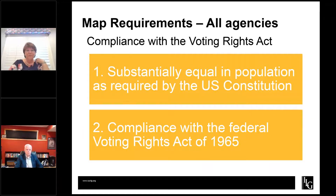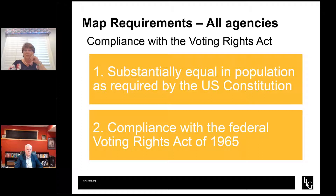These are requirements applicable to all agencies — not just cities, not just districts, but everybody. First, districts have to be substantially equal in population as required by the U.S. Constitution — the principle of one person, one vote. Under federal law, we don't have to have exact equality, only substantial equality, which allows for some deviation from absolute equality. A general rule of thumb is that 10% population differences are acceptable, though there are different rules in different jurisdictions. And compliance with the Federal Voting Rights Act of 1965 is required of both special districts and cities.